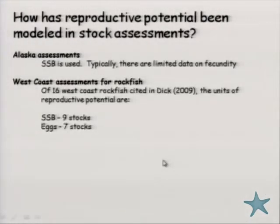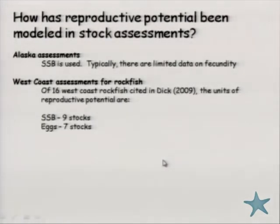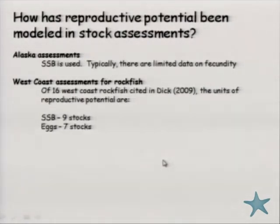On the West Coast, assessments are probably a bit more advanced than in Alaska, largely because E.J. is there and his work applies to West Coast species. Of the 16 rockfish E.J. cited in his dissertation, about half define SRP in terms of eggs rather than SSB. They don't necessarily go as far as using those estimates to construct response-recruit curves for FMSY, but they do characterize depletion in those units. In Alaska, we're still using the SSB paradigm, partly because we don't have an analog to E.J.'s study that we can apply to Alaskan fish.